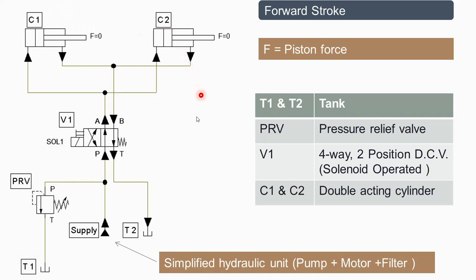This is known as the forward stroke. F is the external piston force, which is assumed to be zero for this particular case.